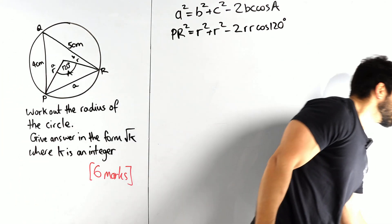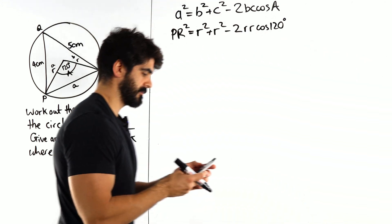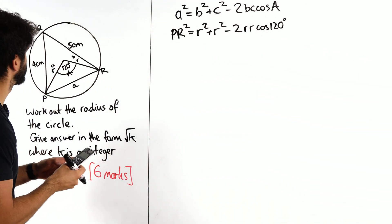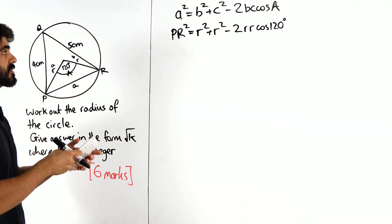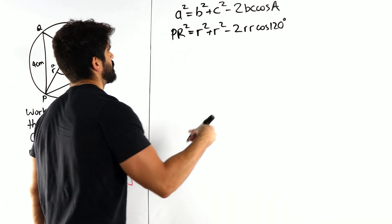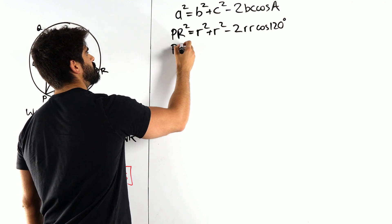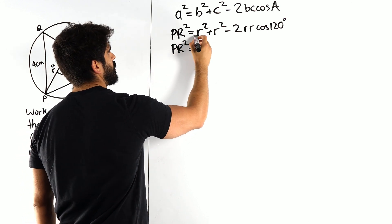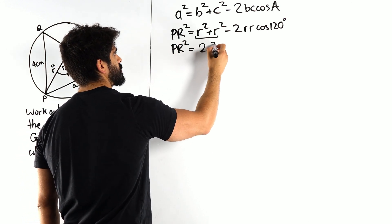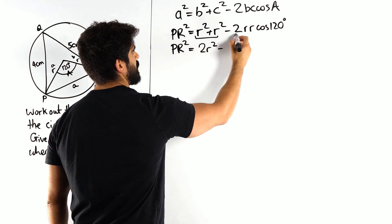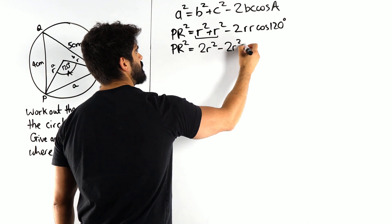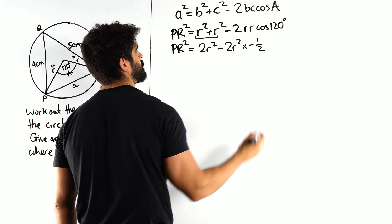Which I'm pretty sure is minus a half, which I will double check before I make a mistake. Cos of 120 is minus a half, never in doubt.